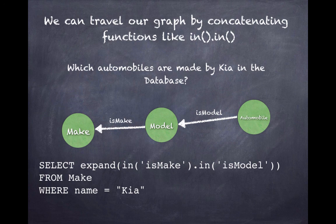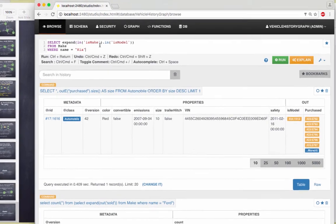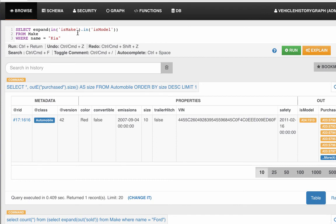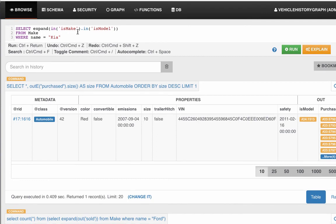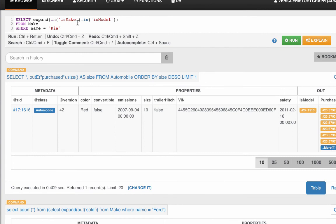So let's start from KIA, the make, and travel the edges that point into it. We'll travel the edge in called isMake to arrive at a model, and we'll travel the edge in called isModel to arrive at an automobile. Now all we do is say select expand in isMake.in isModel from the make named KIA. If we type this into our query editor, we should expect to see the vehicles in a database that are KIAs.